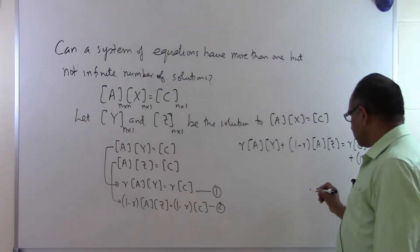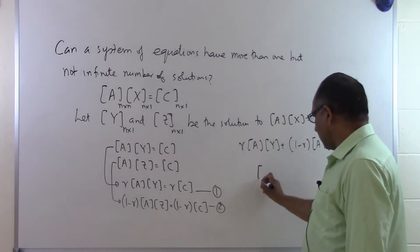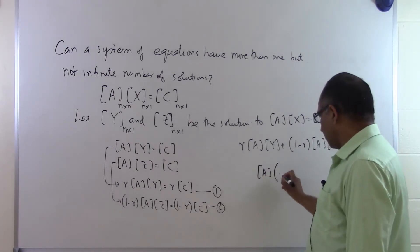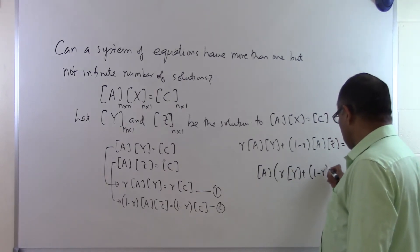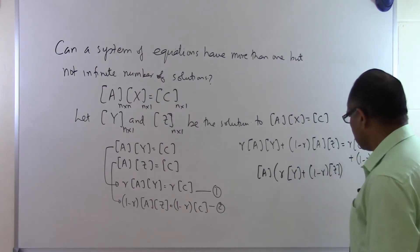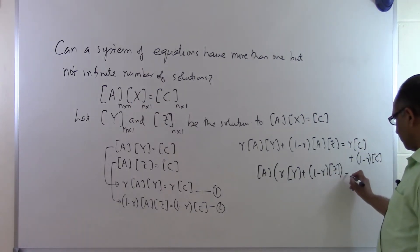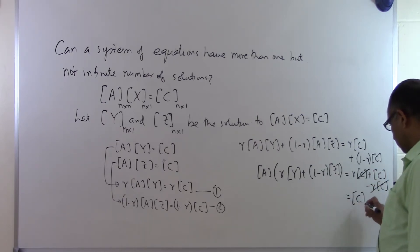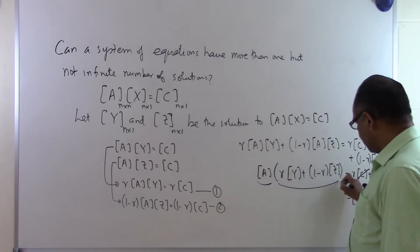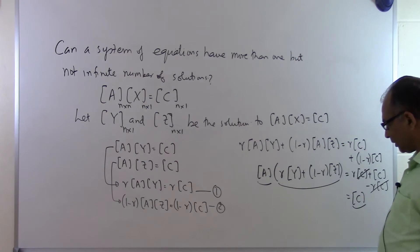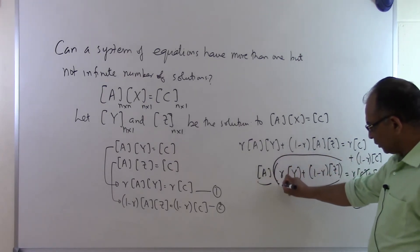And what I can do is I can take A common here and I will get R times Y plus 1 minus R times Z here will be equal to R times C plus C minus R times C. This and this cancels so that is equal to C. So what you are basically finding out is that A multiplied by this is equal to the right hand side vector here, that means that this is a solution.